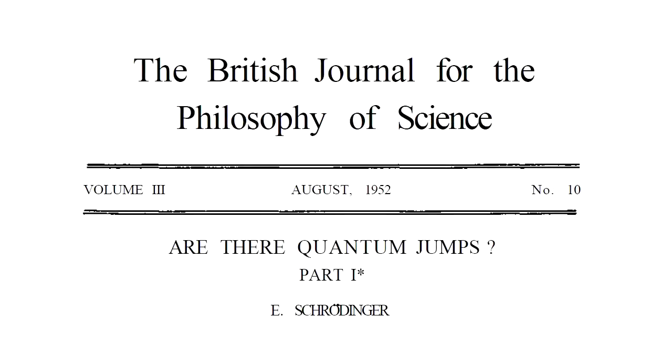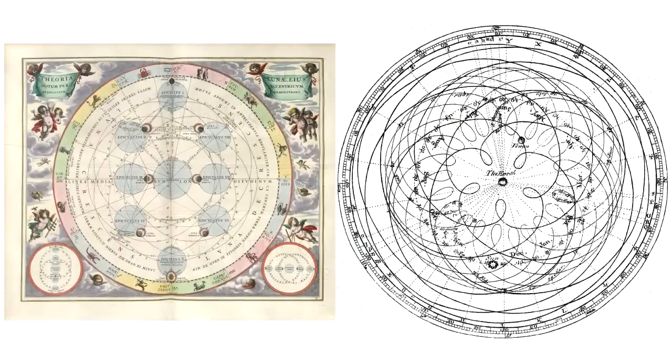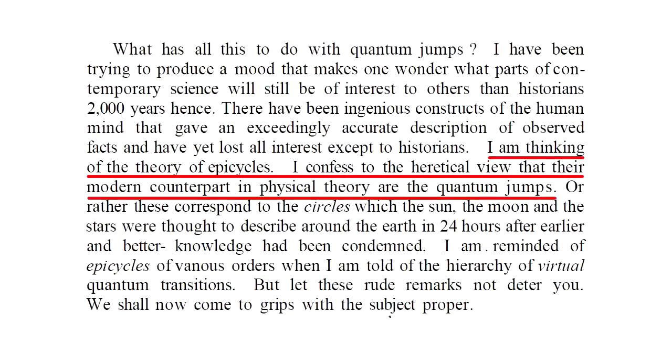Decades later, Schrödinger was still arguing against the quantum jump idea demanded by wave-particle duality. He even went so far as comparing it to the pre-Copernican geocentric model of the solar system, which assumed the planets traveled in complex spiral orbits described by so-called epicycles. He wrote, I am thinking of the theory of epicycles. I confess to the heretical view that their modern counterpart in physical theory are the quantum jumps.